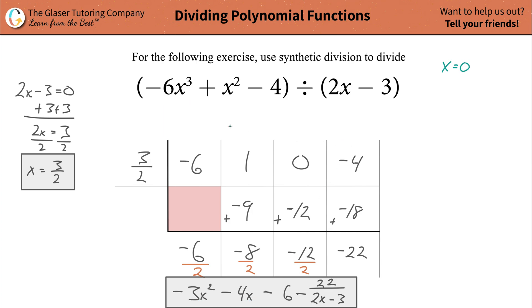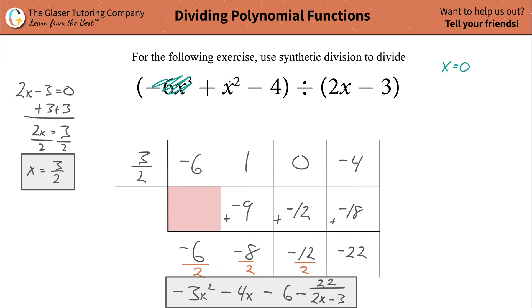Now if you want to check yourself, which I highly recommend, make up a value for x — choose 0 because it makes your life easy — and plug it in everywhere you see it in the dividend, divisor, and quotient. All the x terms go to 0, so you're left with just the constants.